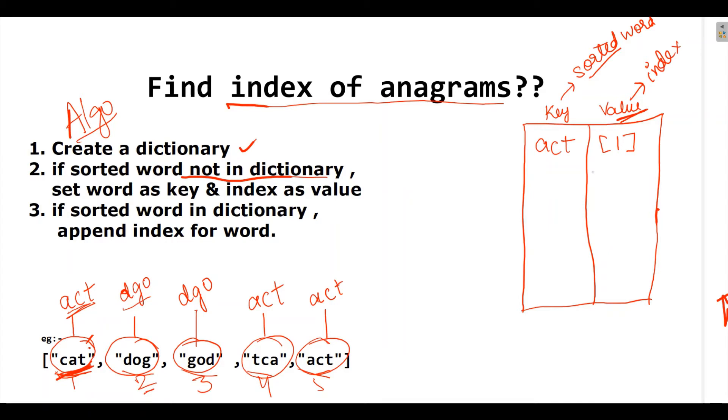Now, again I will see whether it is in dictionary. No, it is not. So, here I will write DGO and I will mention the index of DGO. Then for the third, I will see DGO again.